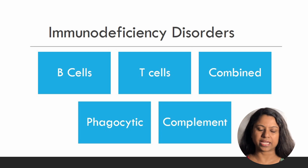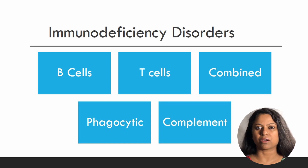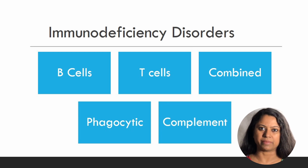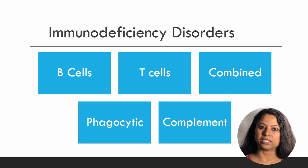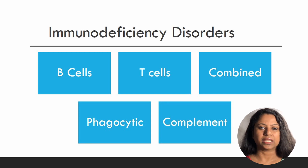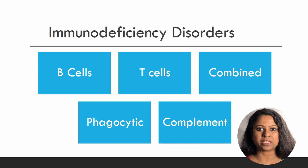Clinically, B cell deficiencies can be differentiated from T cell deficiencies due to the increased risk of recurrent pyogenic infections and infections with encapsulated bacteria. In T cell deficiencies, there is an increased risk of infection with intracellular bacterial organisms and other intracellular microorganisms, as well as fungal and viral infections. They are also predisposed to develop malignancies and autoimmune disorders. In combined T and B cell deficiencies, we see a very severe form of immunodeficiency.